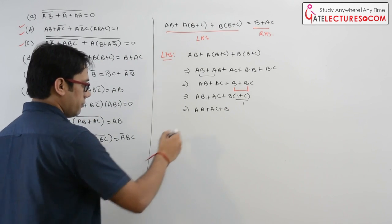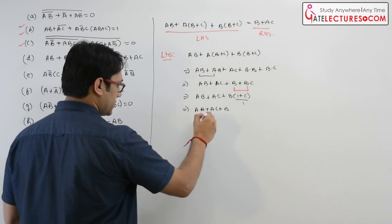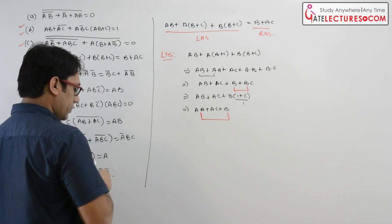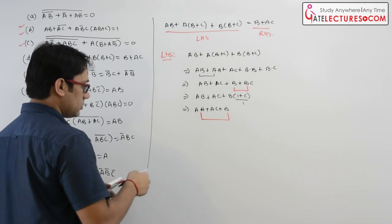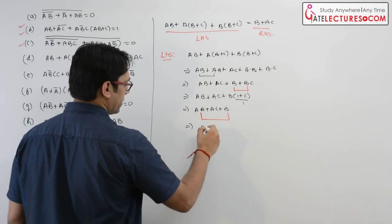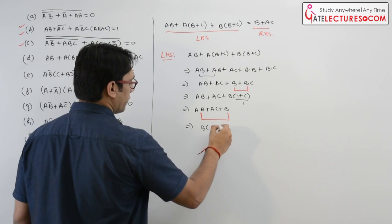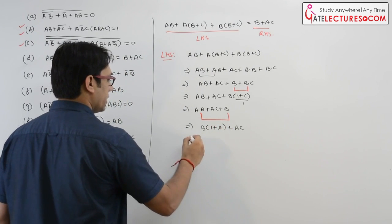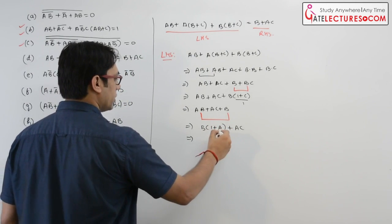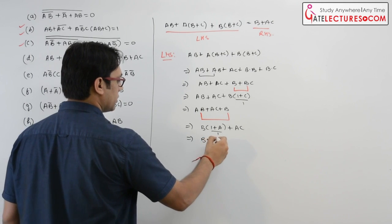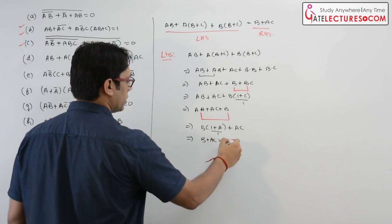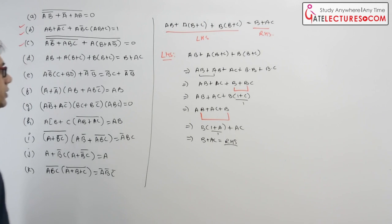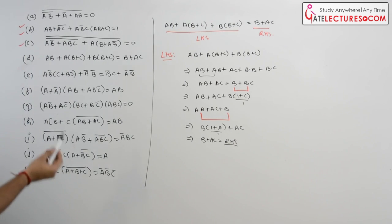Now between B and BC you can apply the absorption law. Taking B as common gives B(1+C), and since (1+C) = 1, it simplifies to AB + AC + B. Then between AB and B, applying absorption law again gives B(1+A) = B, so the result is B + AC, which equals the right hand side. Hence proved.